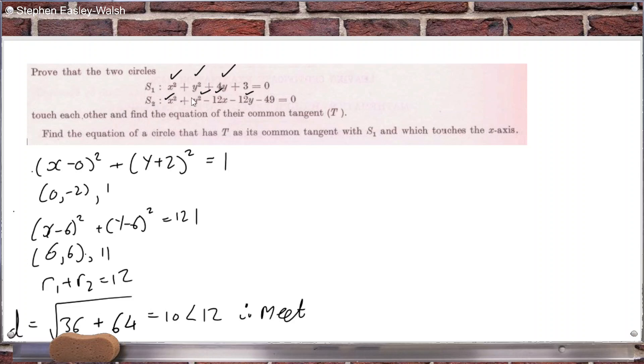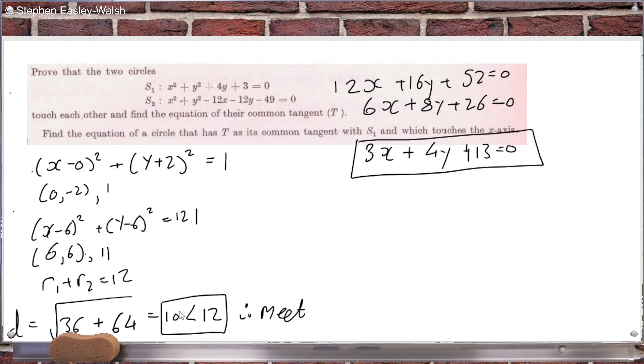The common tangent is quite simple. You just subtract the equations. So if you subtract the equations here, that would be 12x plus 16y plus 52 equals 0, which I can simplify as 6x plus 8y plus 26 equals 0, which I can simplify as 3x plus 4y plus 13 equals 0. So that's the equation of the common tangent.